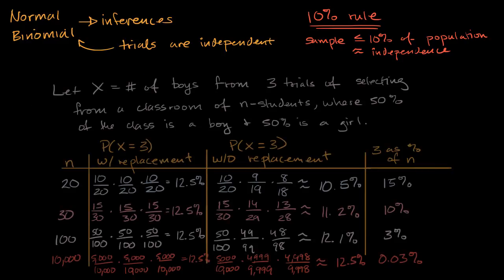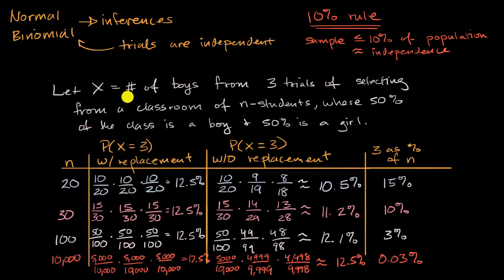So for example, right over here, let X be the number of boys from three trials of selecting from a classroom of N students, where 50% of the class is a boy and 50% of the class is a girl. And so what we have over here is we have a bunch of different Ns. What if we have 20 students in the class? What if we have 30? What if we have 100? What if we have 10,000? And so we could find the probability that we select three boys with replacement in each of these scenarios, and we could also find the probability that we select three boys without replacement. And then we could think about what proportion is our sample size of the entire population?